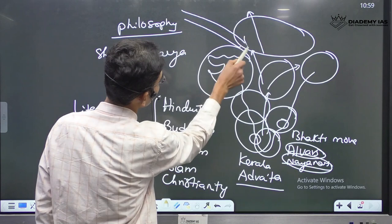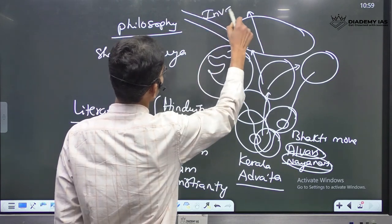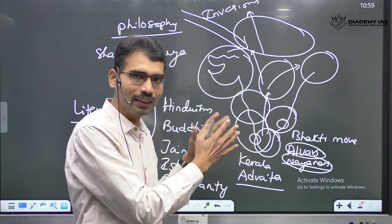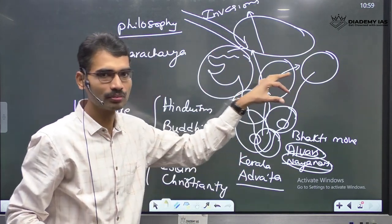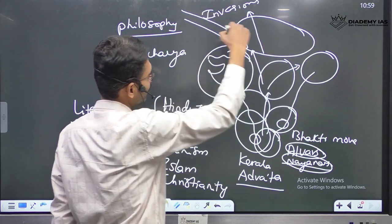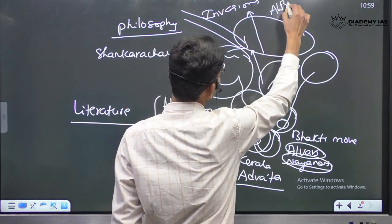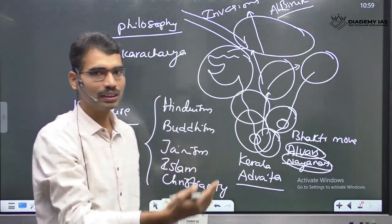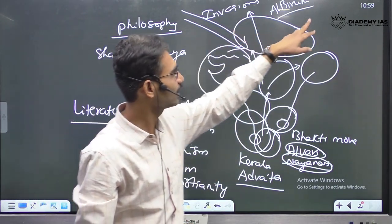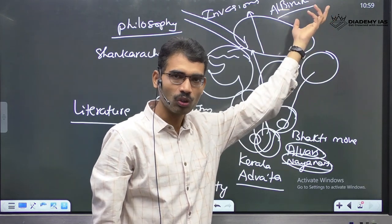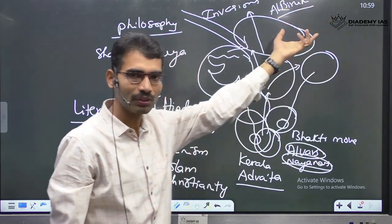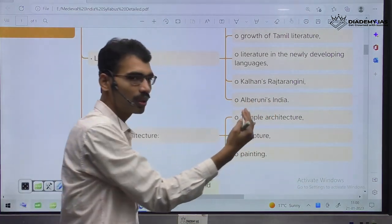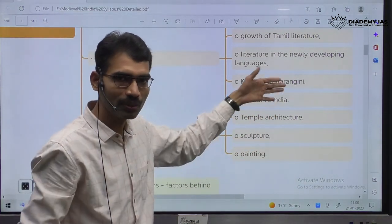Gajni Muhammad and Gauri Muhammad also raided during this time period. Along with those raids, Al-Biruni came. When Al-Biruni came to India, he observed the Indian conditions and wrote about it in his own book, Al-Biruni's India.